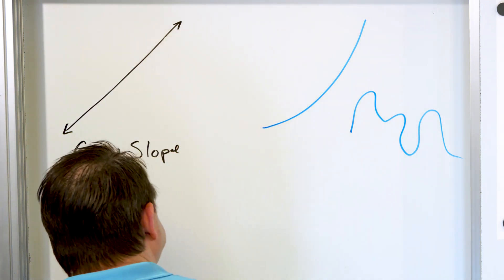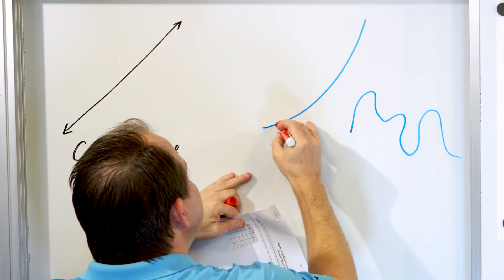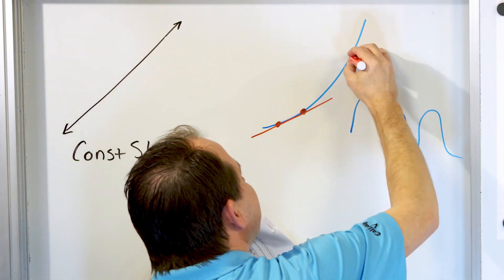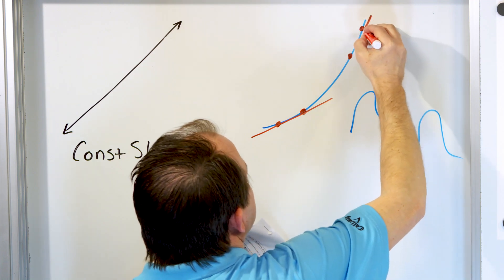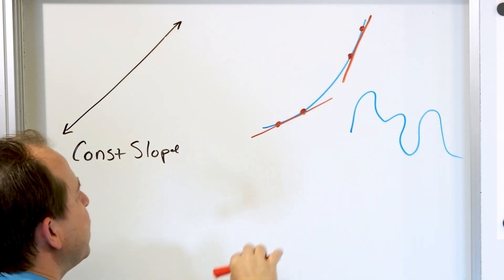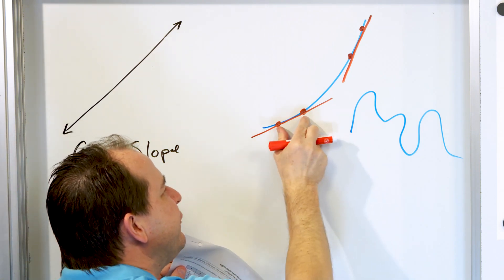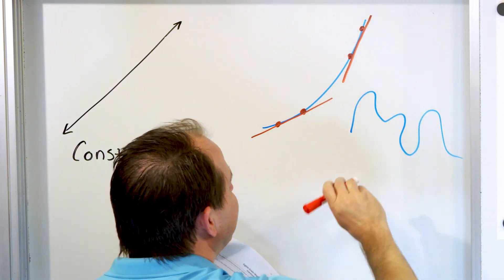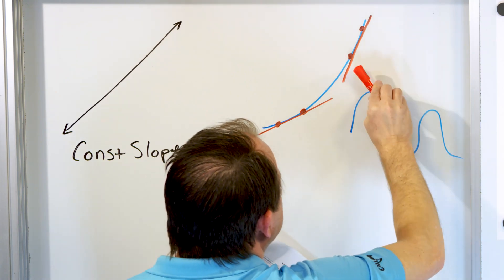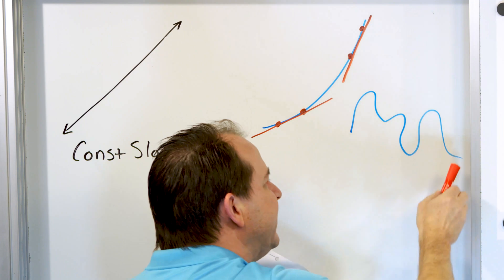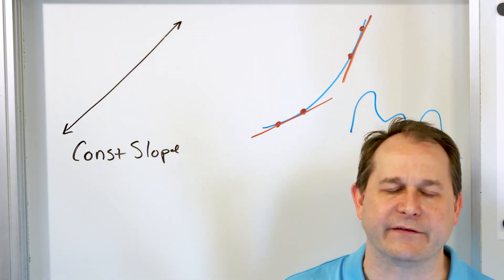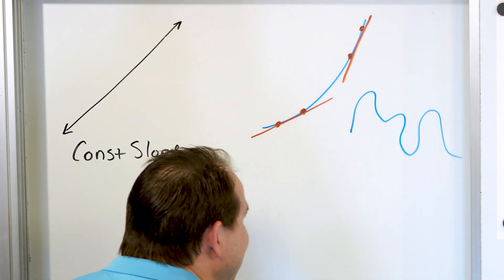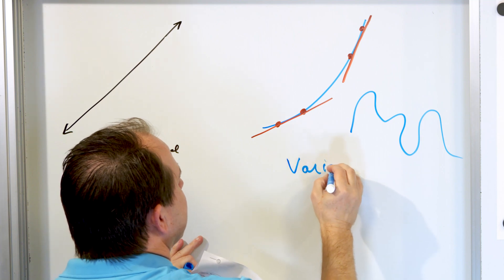If I were to go over here on this curve and pick two random points down here, the line that would go through these two points would look something like this. But if I pick two points that are up on the top part of the graph, I would get a line that is much steeper. If I calculated the slope using these two points on the curve, I would get a lower value. But if I use these, I will get a much different, higher value. And with a crazy shape like this, if I use any two random points, the line would be going all over the place. So I would get different values of the slope with any two points that I pick. So this is called variable slope.